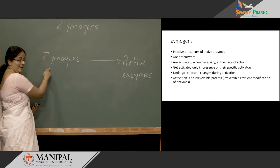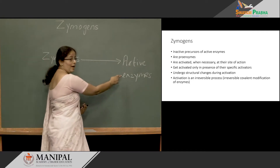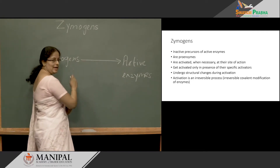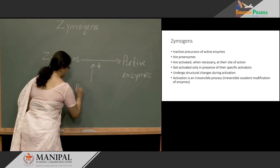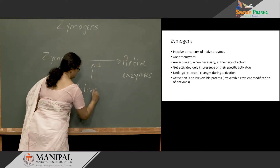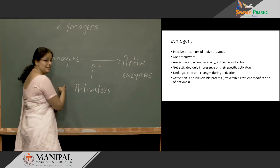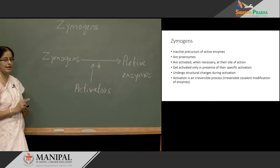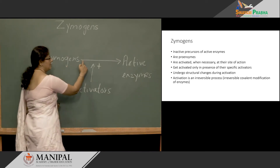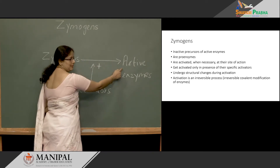Zymogens are inactive enzymes and they are converted to active enzymes at the site of action in presence of activators. This activation happens only at specific sites, only when there is requirement of active enzyme, and this activation process is irreversible — it can only work in this direction.